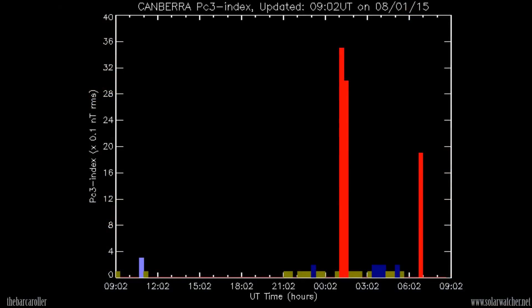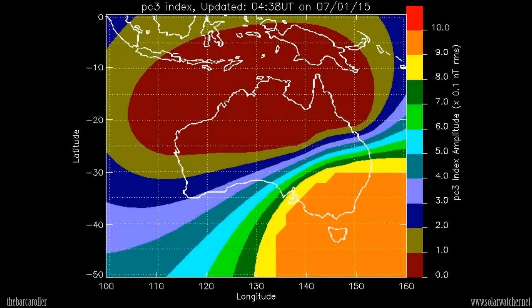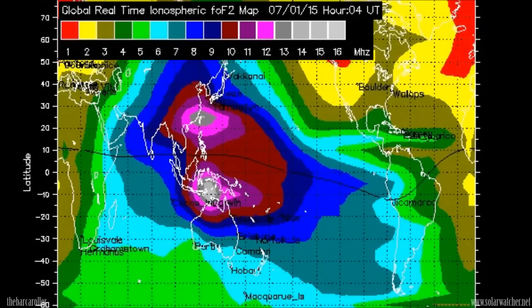Now looking at the anomalies that have been registered over the last 36 hours, significant spikes have been registered in the pulsation PC3 index across the Australian region. These are significant spikes which are indicative of a strong earthquake registered over 6.5 magnitude.